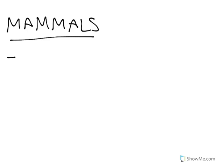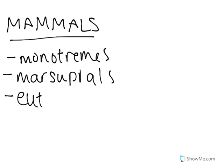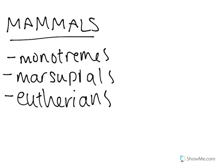There are three main categories for this: there are monotremes, there are marsupials, and there are eutherians. These are the three main categories that we have and we'll give a further look into each of them.